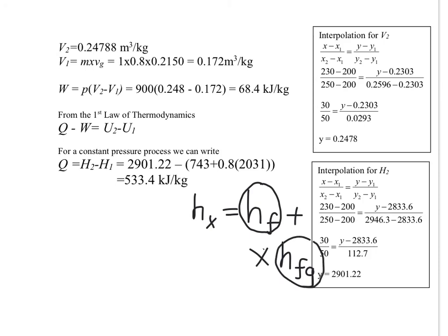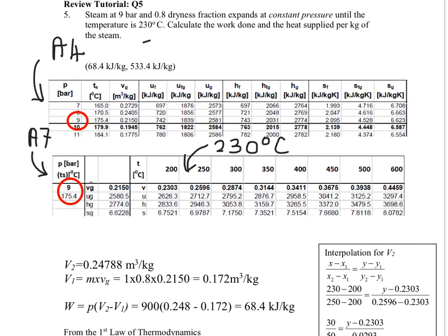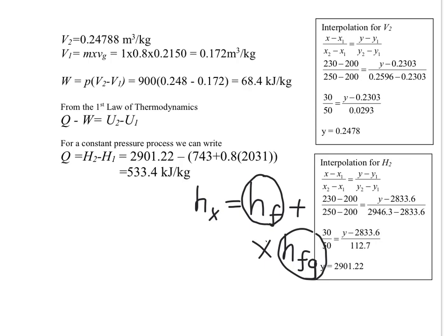So let's go to our 9 bar wet table, wet zone. So 9 bar, there we are. If we look at HF and HFG, we fish these two data out. Go down. There we are here. 743 plus 0.8 times 2031 multiplied by the dryness fraction. And when we do the computation, we get the final answer.